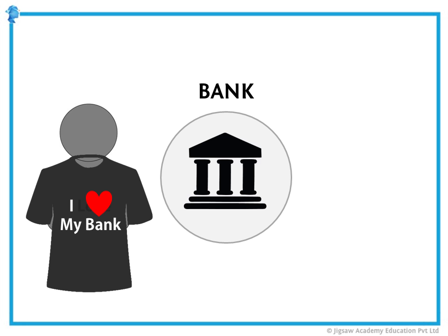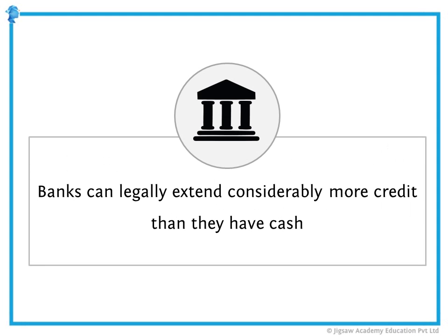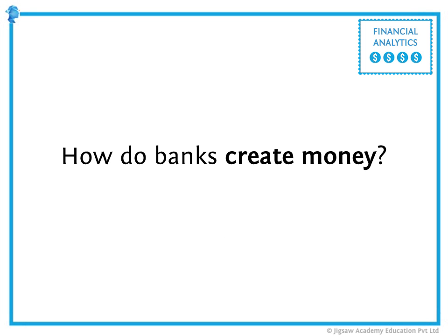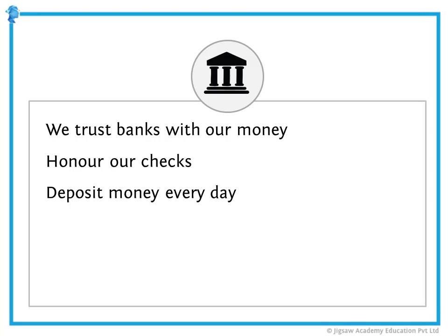The funny thing about how a bank works is that it functions because of our trust. We give our bank the money to keep it safe for us, and then the bank turns around and gives it to someone else in order to make money for itself. Banks can legally extend considerably more credit than they have cash. We trust the bank will have our money when we go back and get it, and that it will honor the checks we write to pay our bills. While people are putting money into the bank every day, the bank is lending the same money and more to other people every day.